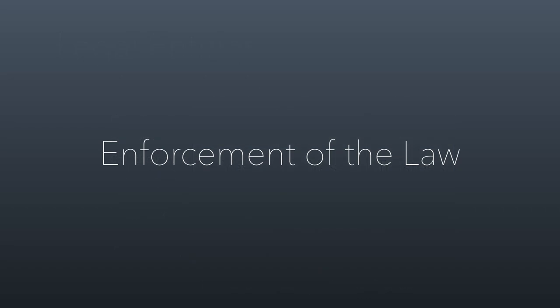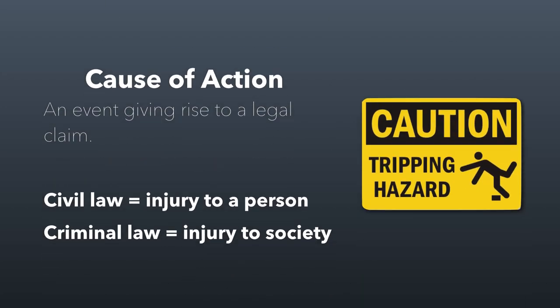Let's talk about how the law is enforced in the United States. Generally speaking, the law is enforced because a cause of action has occurred — an event that gives rise to a legal claim. In civil law, that mostly happens when there's an injury to a person or property. In criminal law, it's an injury that occurs to society. There's no such thing as a private individual bringing a cause of action for a criminal case — criminal law is only enforced by representatives of the state or federal government. State or federal attorneys are the ones who bring criminal charges to court. As an individual, you have no power to force a criminal charge; only a state or federal attorney can do that.